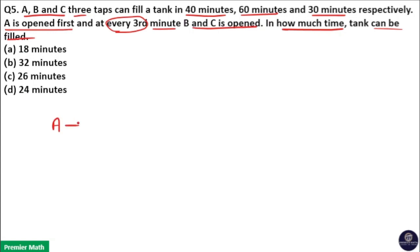Here A can fill the tank in 40 minutes, B can fill the tank in 60 minutes and C can fill the tank in 30 minutes. Now here work rate is the same, that is A, B and C both fill the same tank of same capacity. So work rate is the same.